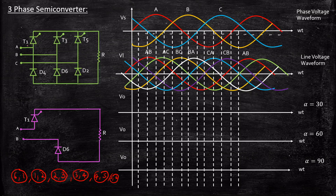If T1 is triggered, it will not be triggered again until the next 120 degrees. Then T3 will be triggered after that, and T5 will be triggered after another 120 degrees. That is where we achieve control across the full 360 degrees.